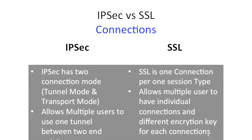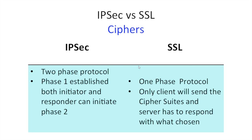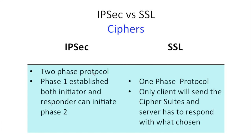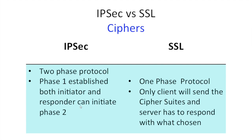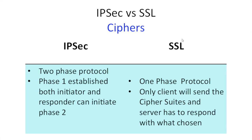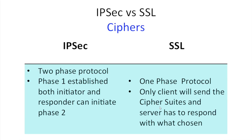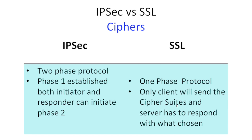For ciphers, IPSec is a two-phase protocol: in phase one it establishes both initiator and responder, and the responder can initiate phase two. SSL is a one-phase protocol where the client sends the cipher suites it supports and the server chooses one of the cipher suites provided by the client.